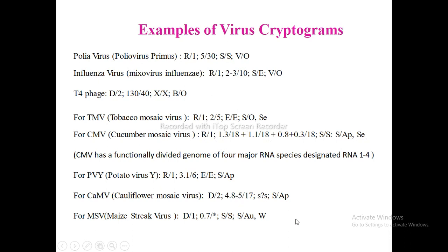You can explore all other examples similarly. For instance, a maize streak virus has an unknown factor, so an asterisk is placed there. O is used when the vector is not known, or when only seed transmission is known but other vectors are not. B for bacillus indicates bacteria — for example, T4 phage infects bacteria, so the host is bacteria. Influenza virus has vertebrates as the host. This way, cryptograms give us precise information about nucleic acid type, strandedness, molecular weight, percentage in nucleocapsid, particle shape, host, and vector.